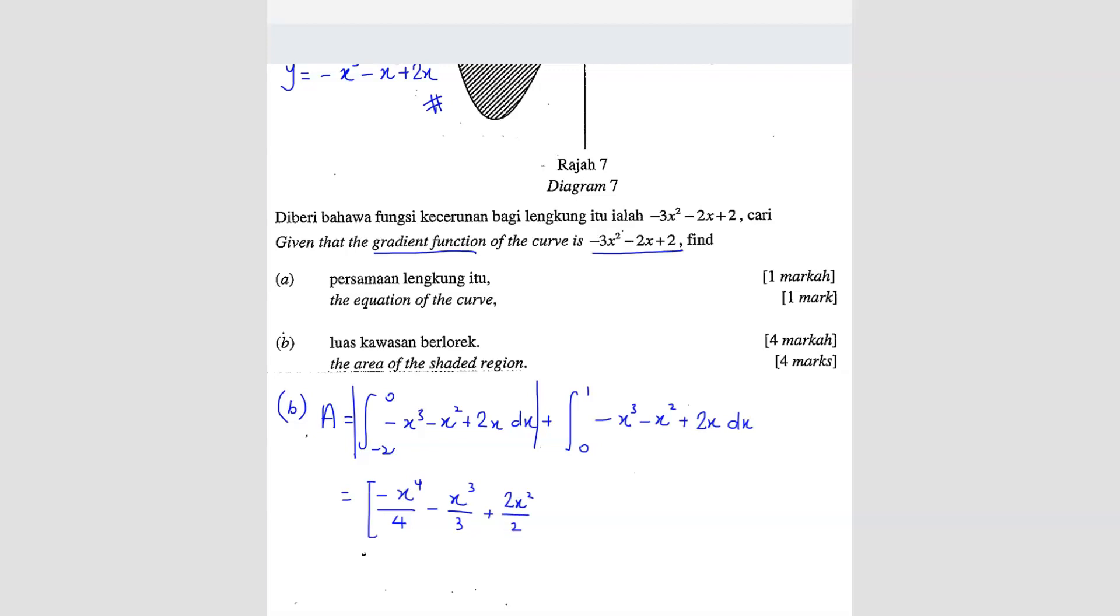So I'm just integrating. So this is the first part plus you're going to get the same thing here. Negative x power 4 over 4 minus x power 3 over 3 plus 2x square over 2.